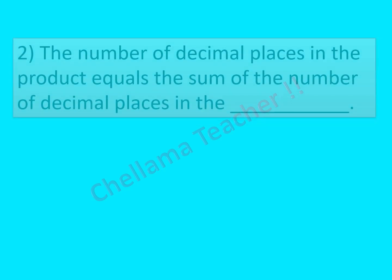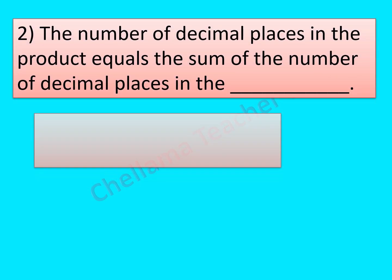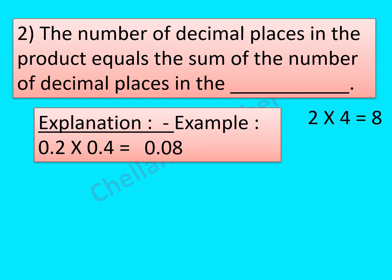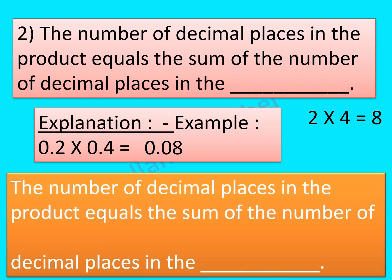Question No. 2: The number of decimal places in the product equals the sum of the number of decimal places in the dash. For example, 0.2 multiplied by 0.4: 2 × 4 = 8, and placing the decimal gives 0.08. The decimal places in the product — 2 — equals the sum of decimal places in the factors. So the answer is: the number of decimal places in the product equals the sum of the number of decimal places in the factors.